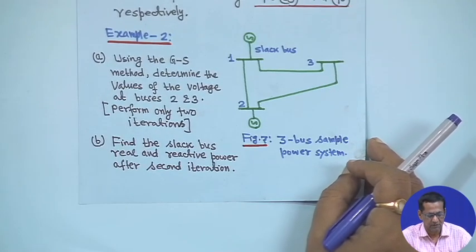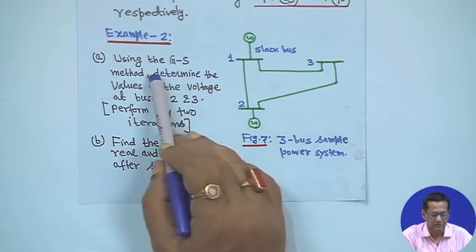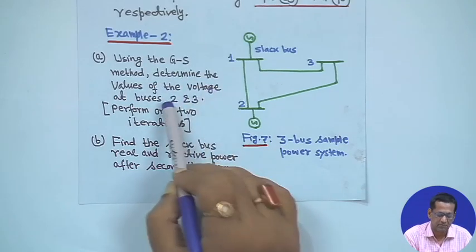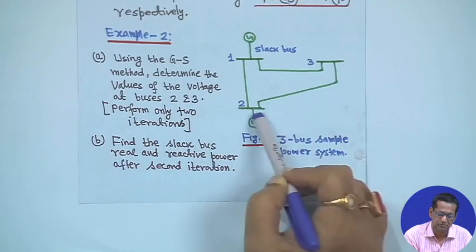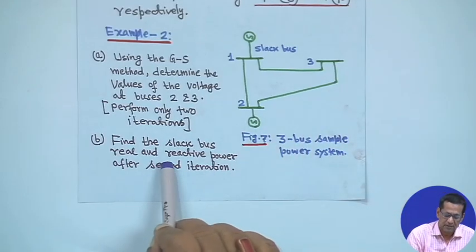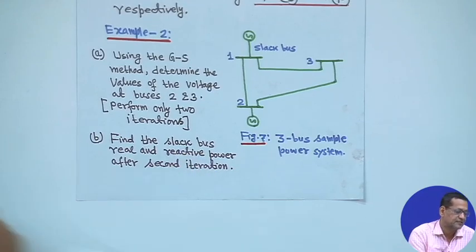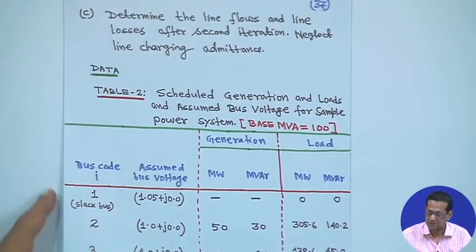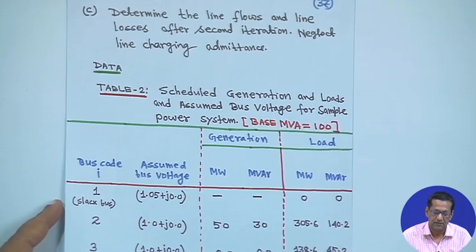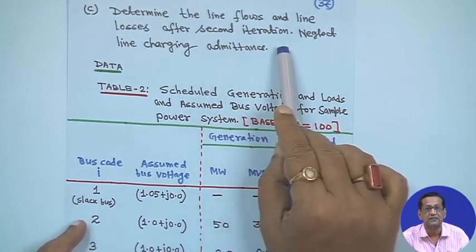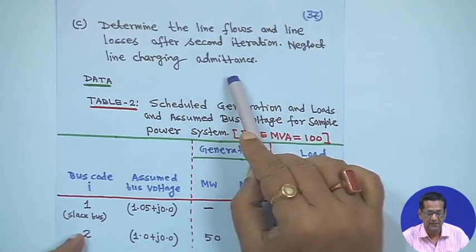The problem has three parts. Part A: using the Gauss-Seidel method, determine the voltage values at buses 2 and 3. Part B: find the slack bus real and reactive power after the second iteration. Part C: determine the line flows and line losses after the second iteration, neglecting line charging admittance.